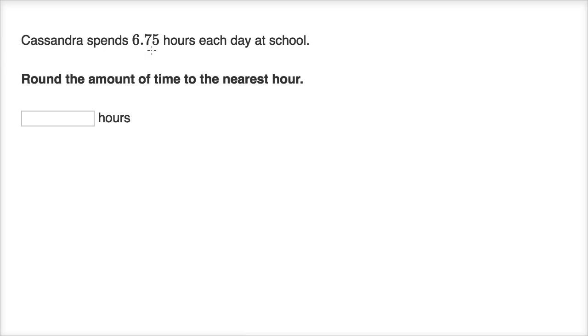Cassandra spends 6.75 hours each day at school. Round the amount of time to the nearest hour. All right, so 6.75. You might be a little confused, and I encourage you to pause the video again and try to solve it on your own.